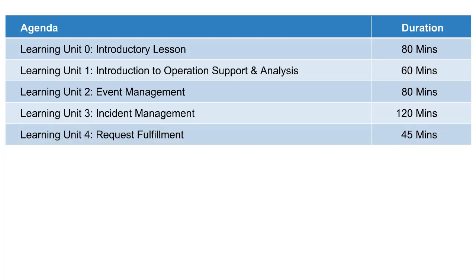Learning Unit 4 introduces you to Request Fulfilment. This unit covers the request fulfilment process and how it contributes to OSA. A complete overview of the objectives, scope and importance of request fulfilment as a process to generate business value are explored. Policies, principles, concepts, activities, methods, request models and techniques are explained in relationship to OSA practices and information management. Metrics used in Request Fulfilment are also discussed.